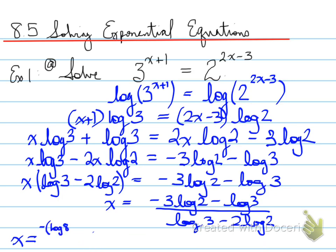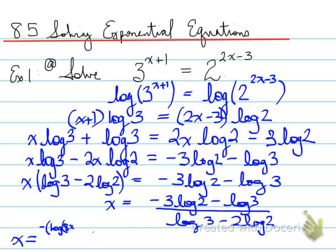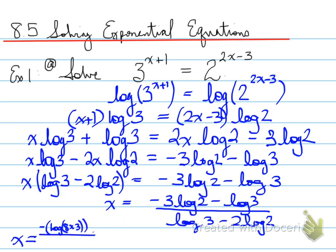To simplify the numerator, I pull out a negative so that I get the sum of two logs. The sum of two logs, using the multiplication law of logarithms, equals log of 8 times 3. The 8 came from 2 to the power of 3 using the power law, and the 3 is the other factor — with a plus sign because I factored out a negative. So the numerator becomes log of 24.